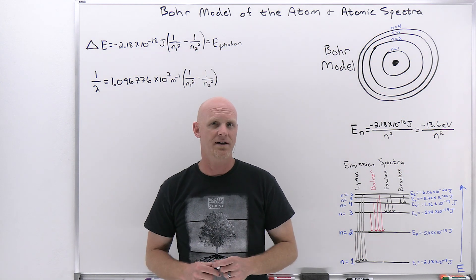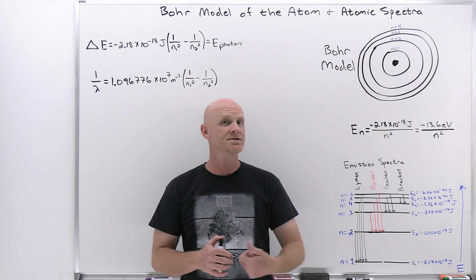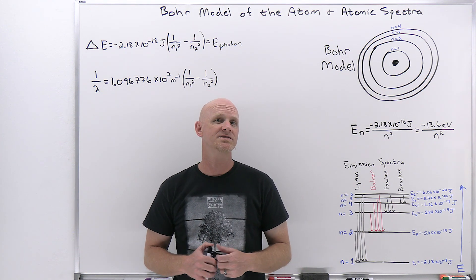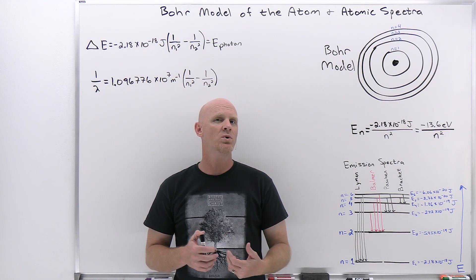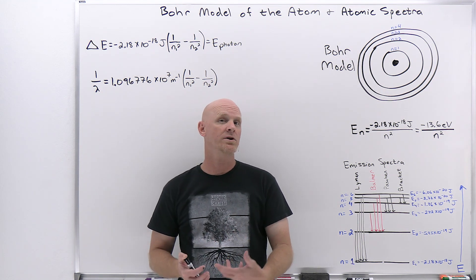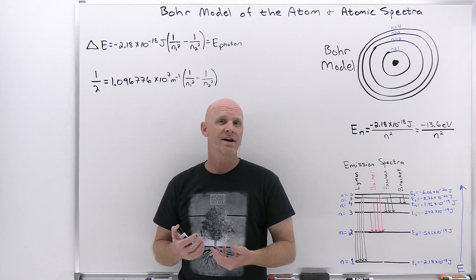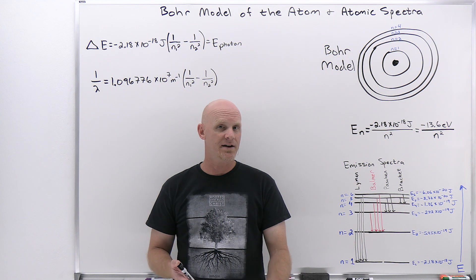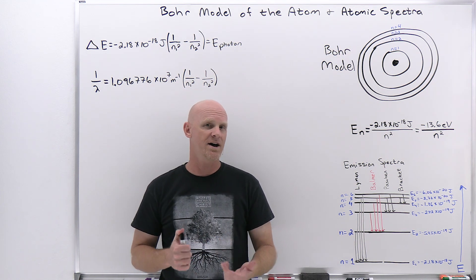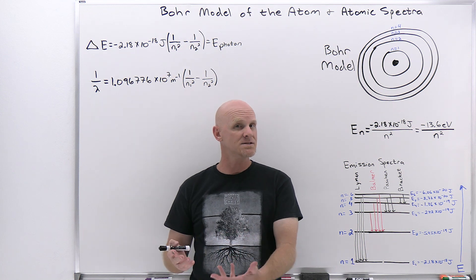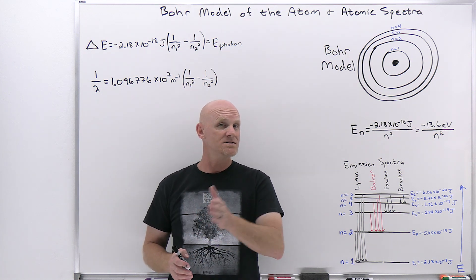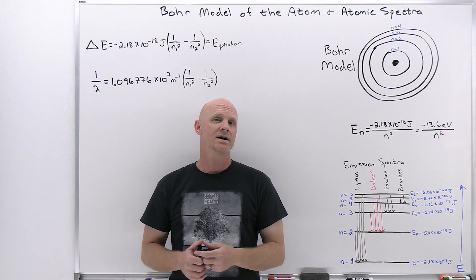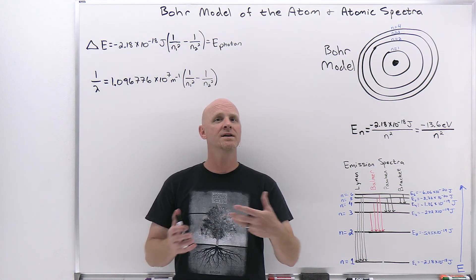Planck and Einstein came up with their theories and associated equations for blackbody radiation and the photoelectric effect because these quantized theories fit the data. Similarly, Niels Bohr in 1913 came up with a quantum model of the atom where electron energies were quantized, because it fit the data specifically for the atomic spectra of hydrogen. These atomic spectra are sometimes called line spectra because certain specific wavelengths, frequencies, or energies exist.